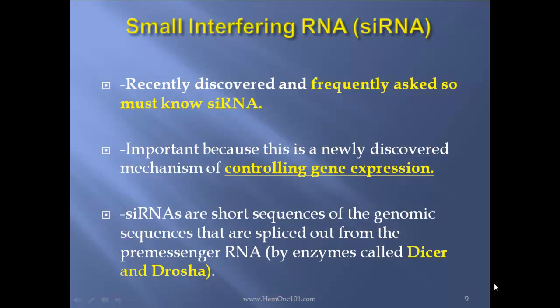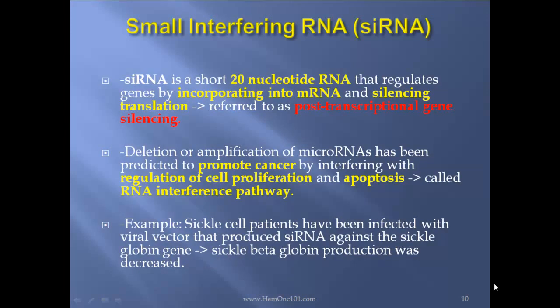Small interfering RNA, siRNA — recently discovered and frequently asked, so you must know siRNAs. This is a newly discovered mechanism of controlling gene expression. siRNAs are short sequences of the genomic sequence that are spliced out from the pre-messenger RNA by enzymes called Dicer and Drosha. The introns that are spliced out can actually end up becoming the siRNA. siRNA is a short 20-nucleotide RNA that regulates genes by incorporating into mRNA and silencing translation — referred to as post-transcriptional gene silencing. Deletion or amplification of microRNAs has been predicted to promote cancer by interfering with regulation of proliferation and apoptosis, called the RNA interference pathway.